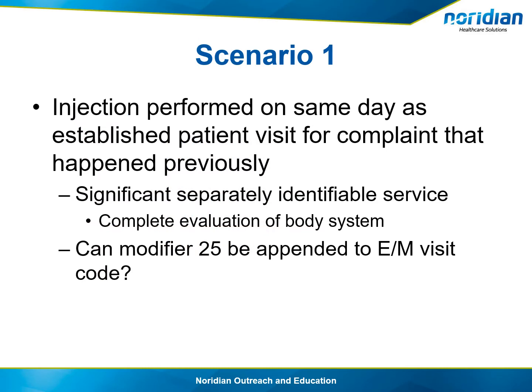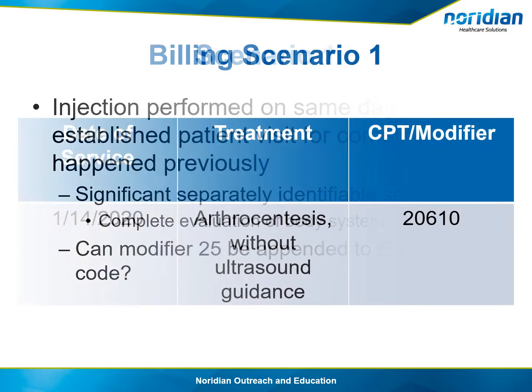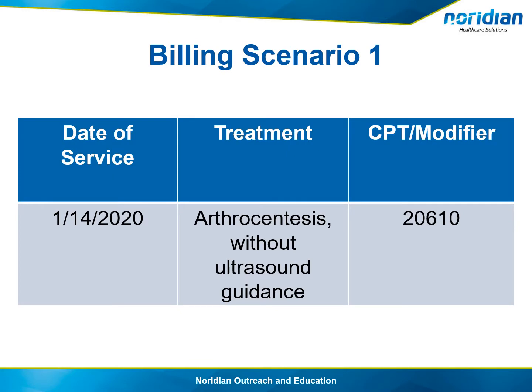Now let's go through different scenarios — what can or cannot be billed and which modifier to use. Starting with the 20610 service and the provider wanting to bill for an office visit. In scenario 1, an established patient comes in complaining of pain in his knee. The doctor looks at the patient's knee, knows instantly that the patient has had this before, informs him that an arthrocentesis injection is needed, and proceeds. Since the injection is performed on the same day as the established patient visit and the doctor has seen this patient before, a significant separately identifiable service was not done to determine a need for the procedure, so an office visit should not be billed.